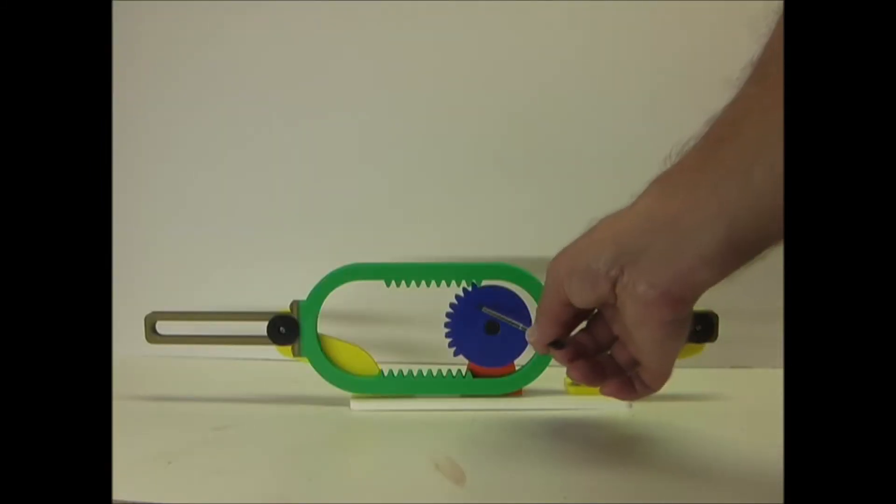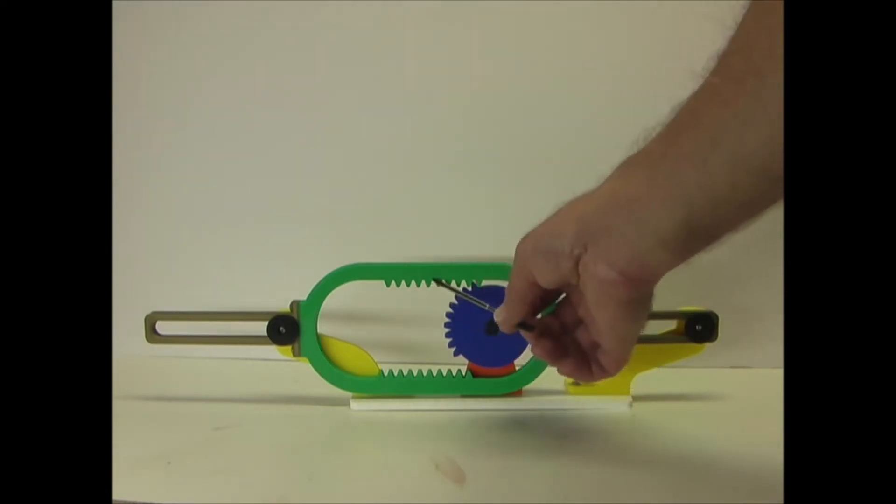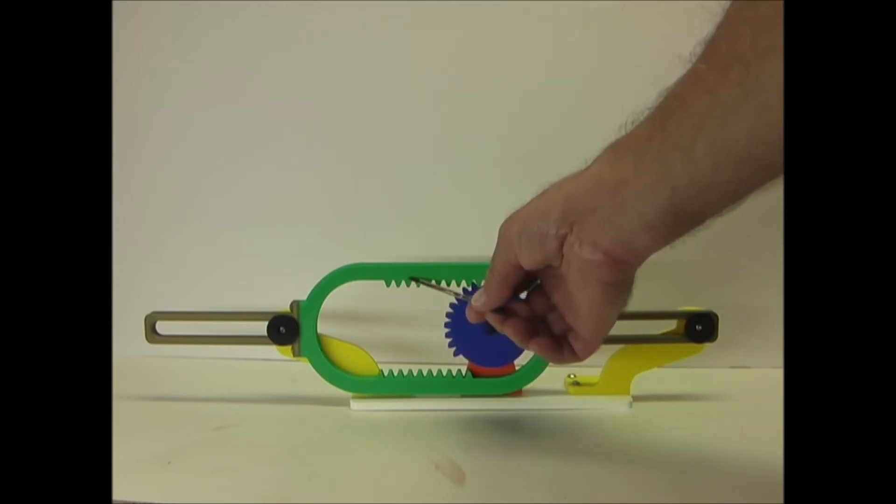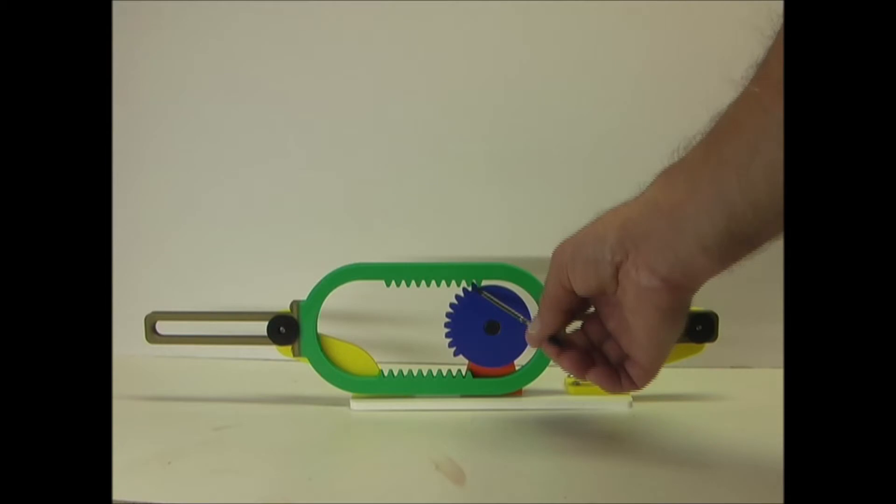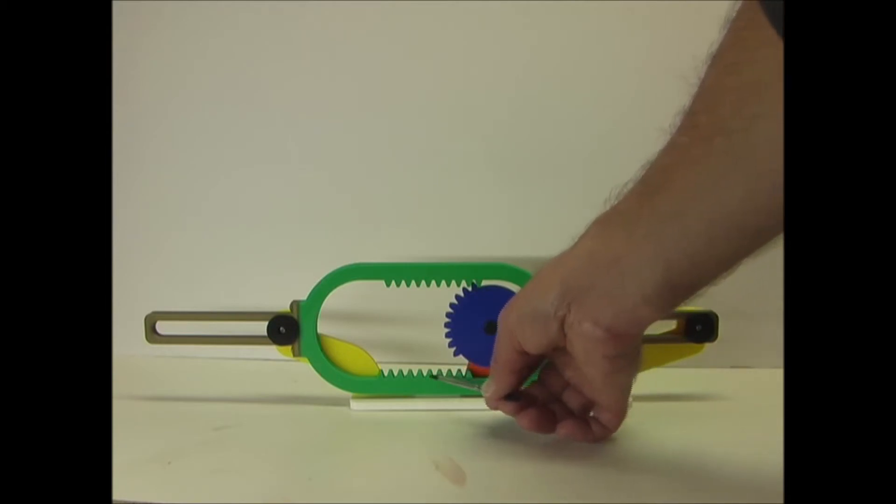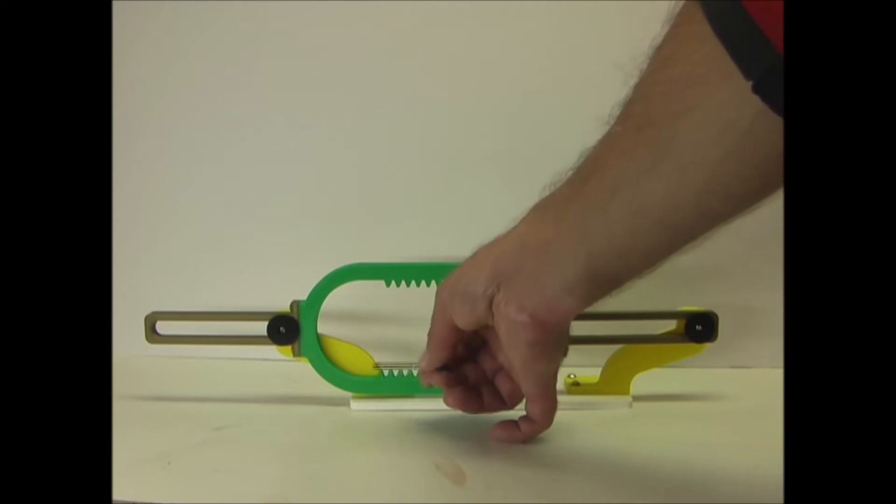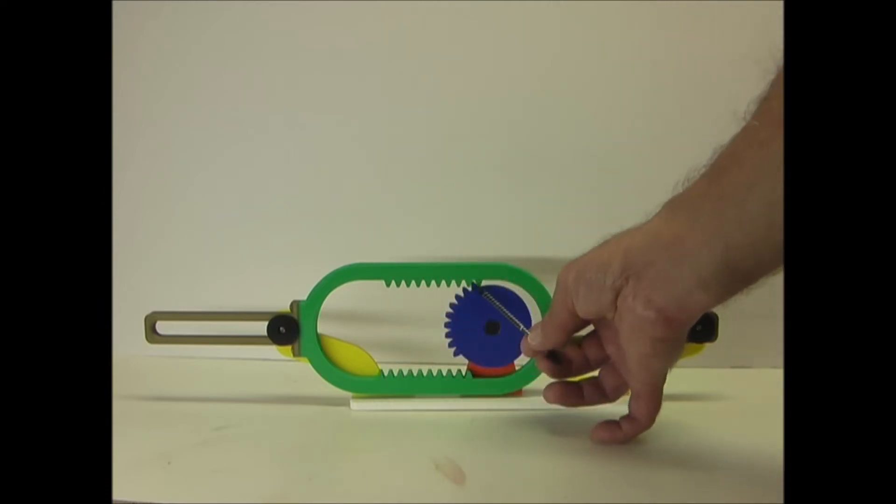This one has a pinion, or a partial pinion with teeth on it, a rack on the top and a rack on the bottom. You see the rack on the top is slightly offset to the right, and the one on the bottom is slightly offset to the left. So there's one more tooth on the bottom here, one more tooth on the top here.